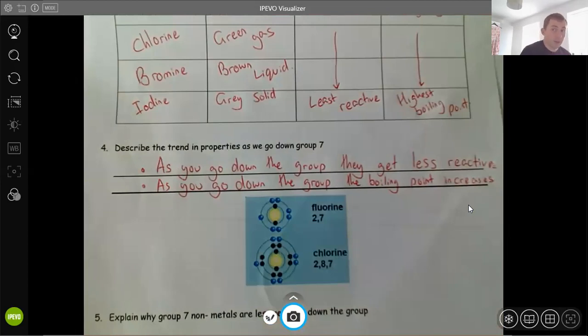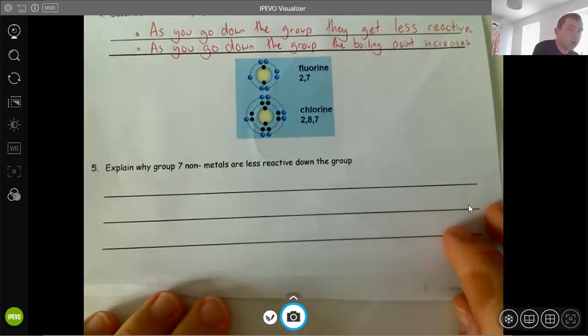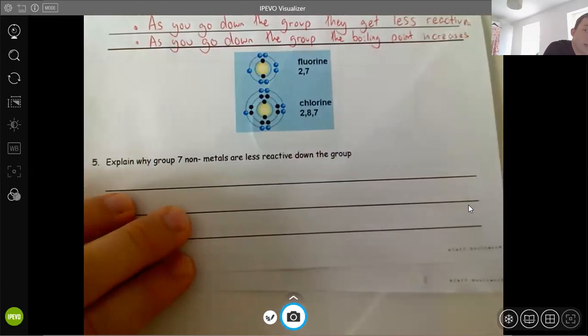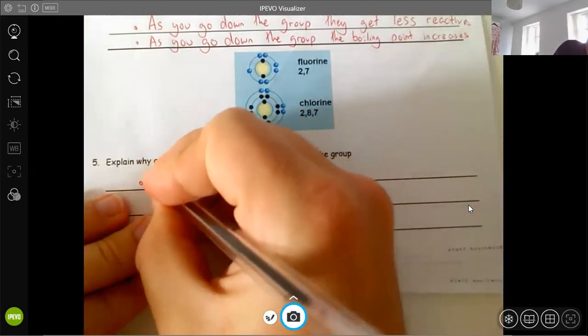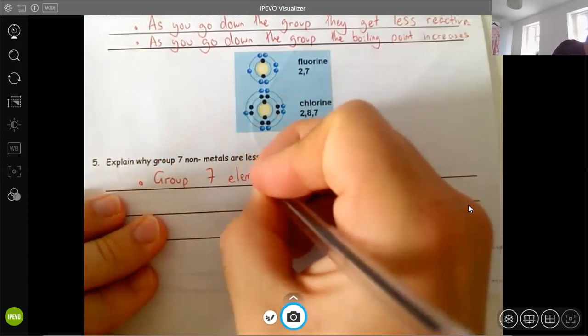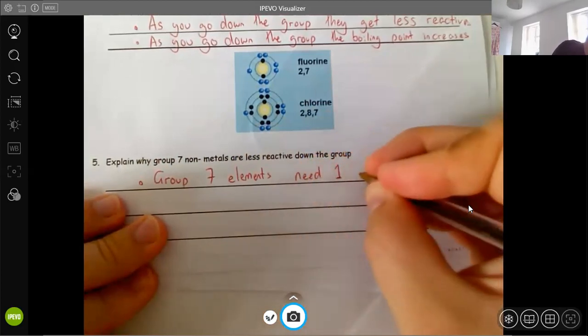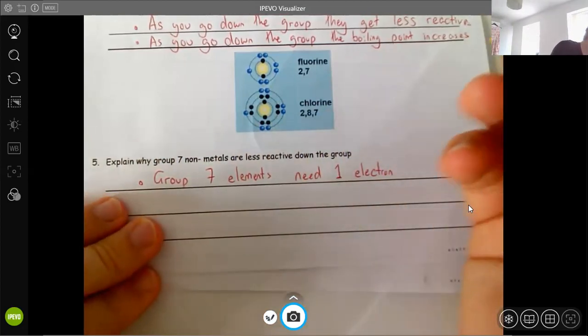So the last little bit, we've explained the reactivity. It's very similar to what you've done last time. Let's do them together. So it says explain why they get less reactive as you go down the group. So like before, all atoms want to have a full outer shell. So we're going to say, Group 7 elements. Therefore, they need one electron to fill the outer shell. That is why they're reactive. They want to get a full outer shell.